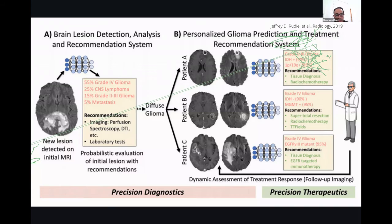Do we need to do DTI? Do we need to do spectroscopy or perfusion, diffusion MR images, or laboratory tests? After all imaging datasets are used, we're going to further apply this data and biological data towards personalized glioma prediction and treatment recommendation systems.